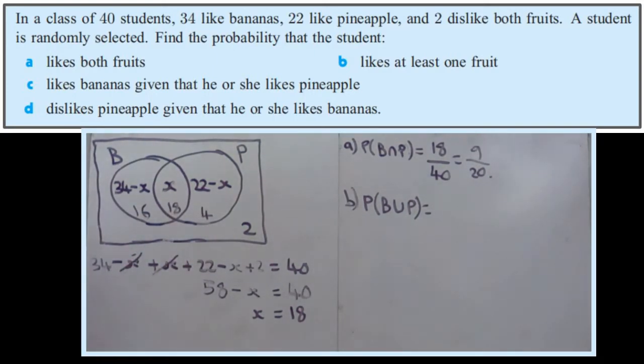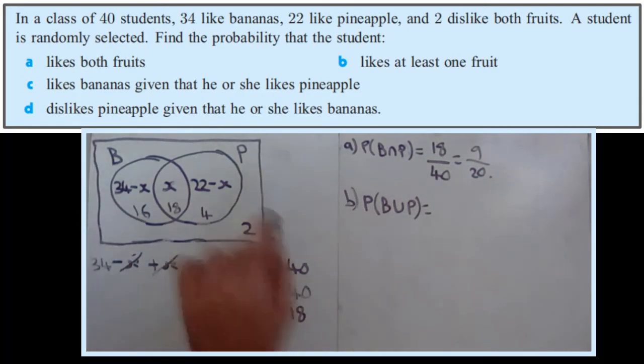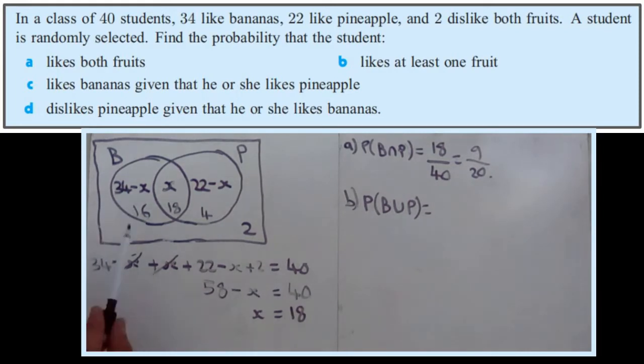So there's two ways to do this. You can add up all these three numbers, or you can realize that there's only two that aren't in the union, and there's 40 in the universe, so that must leave 38. But either way, you either add these numbers up to get 38 or take this away from 40.